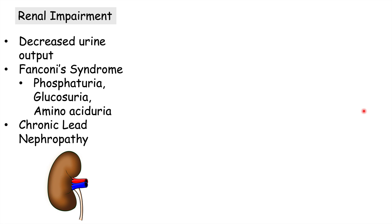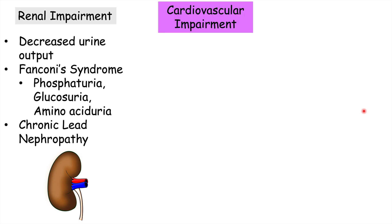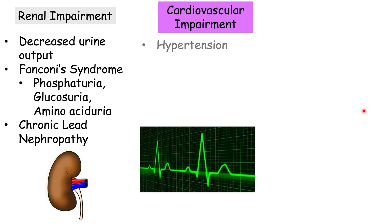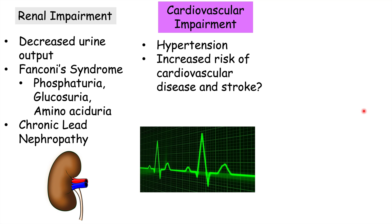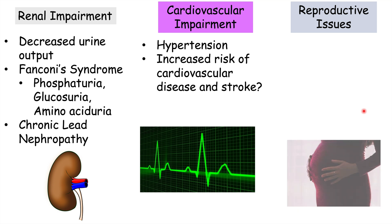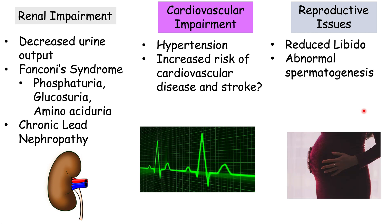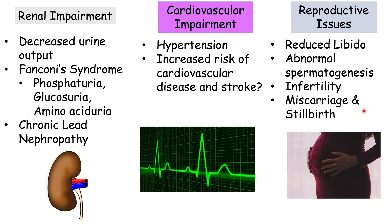Chronic lead nephropathy can also occur. Lead poisoning can lead to cardiovascular impairment as well, including hypertension, which can be related to renal impairment but may also have a renal-independent mechanism, and an increased risk of cardiovascular disease and stroke. There are also reproductive issues, including reduced libido, abnormal spermatogenesis and infertility in males, and an increased risk of miscarriage and stillbirth in females.